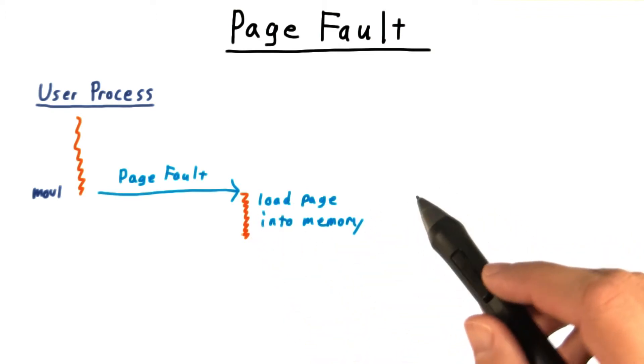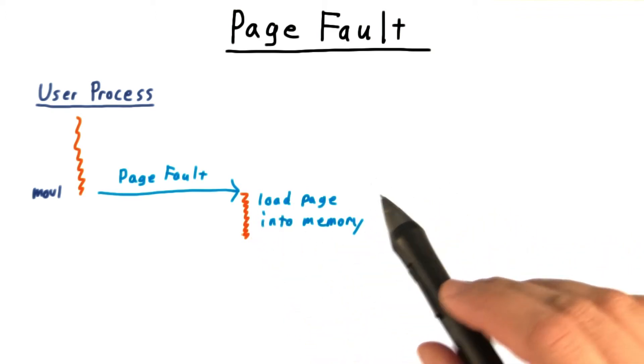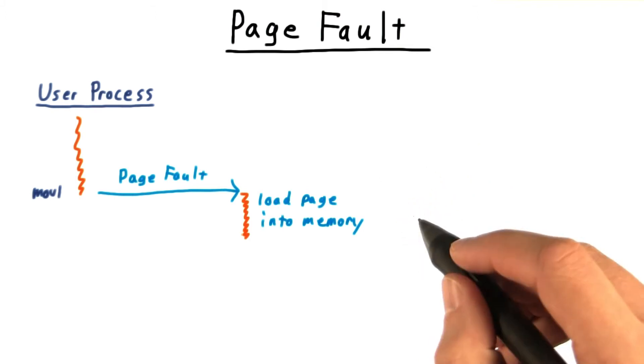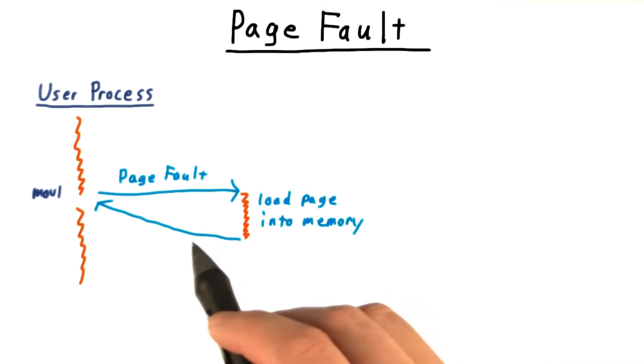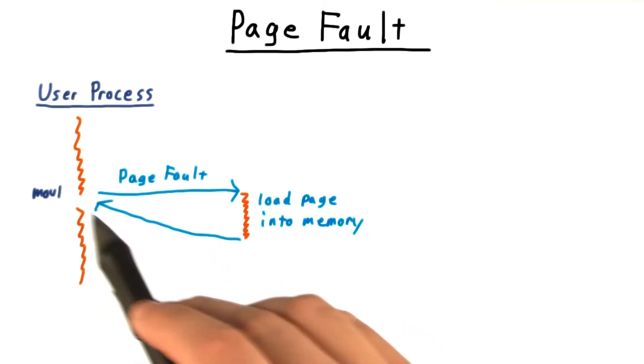He checks to make sure the request is actually valid, and sends a seg fault if it isn't. Then he loads the desired page into memory, gets everything ready, and then tells the scheduler that the process is ready to resume.